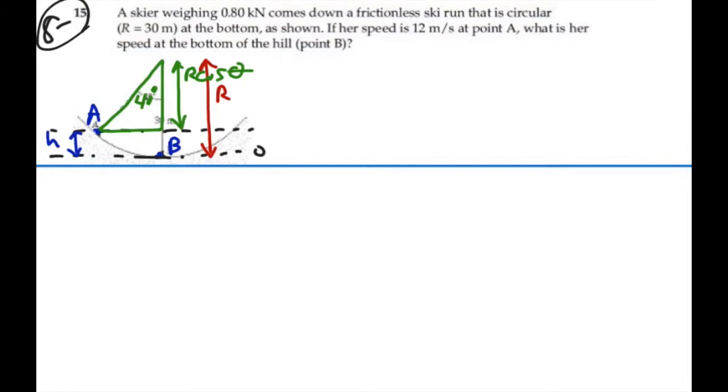So the difference between those two is going to be H. In other words, H is going to equal R minus R cosine theta. In this case, that's going to be 30 meters minus 30 times the cosine of 40, and that is equal to 7.02 meters.